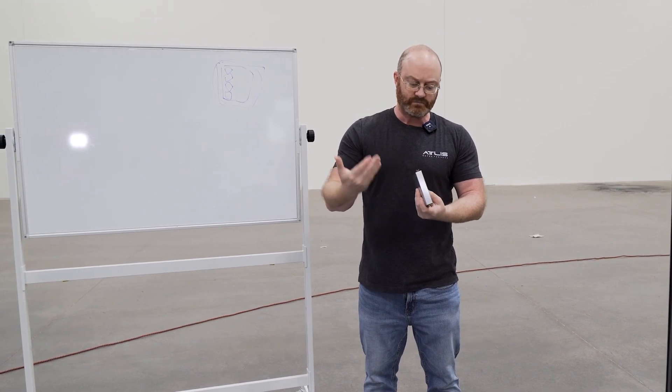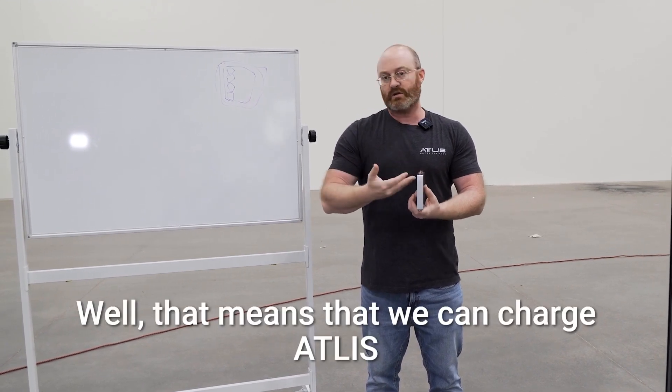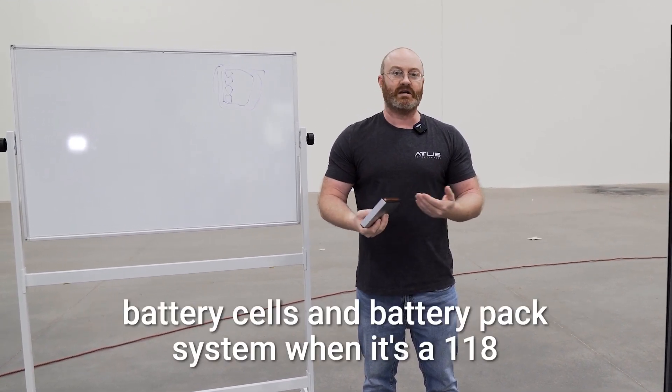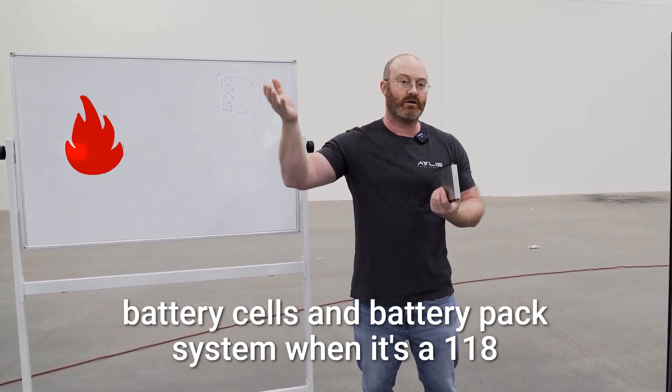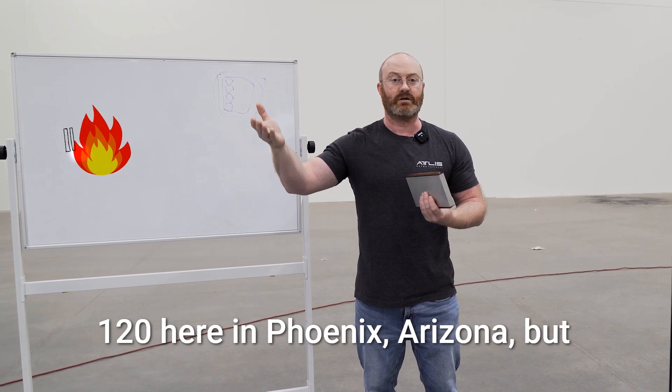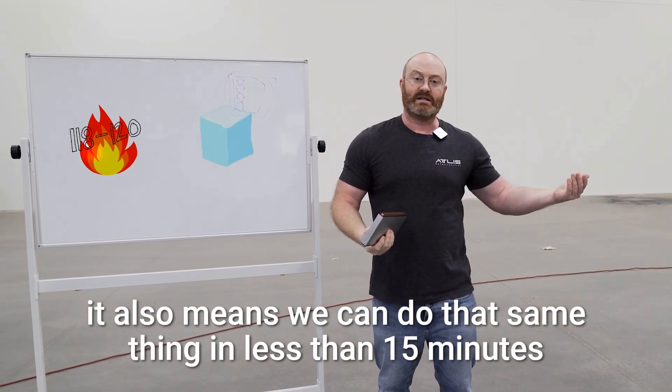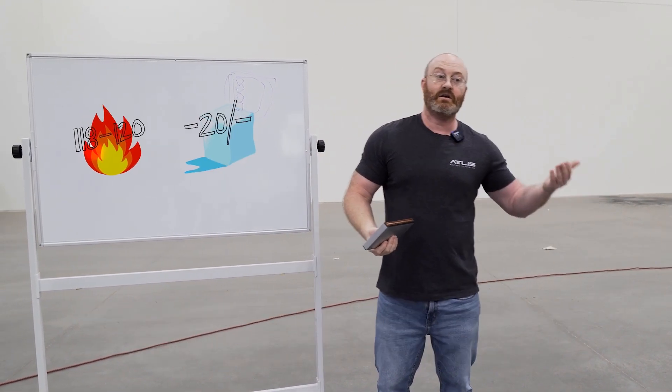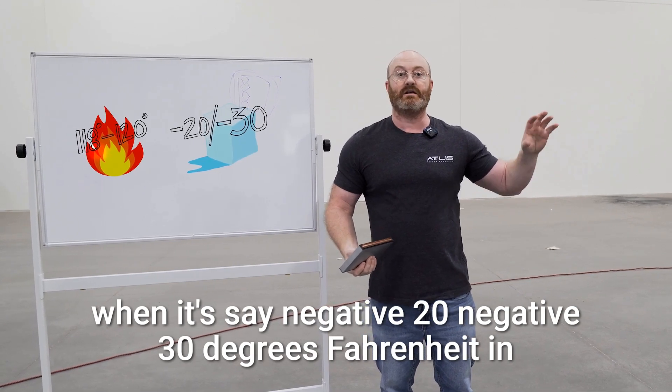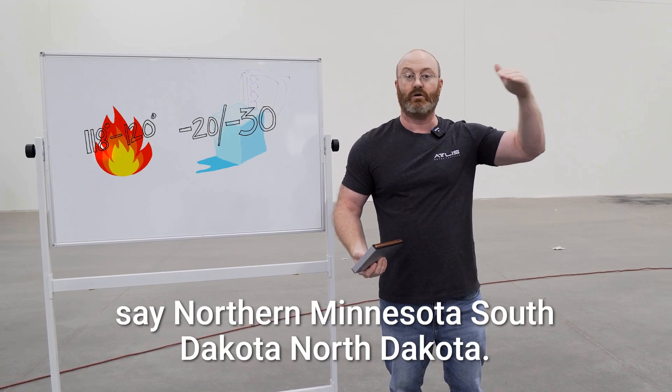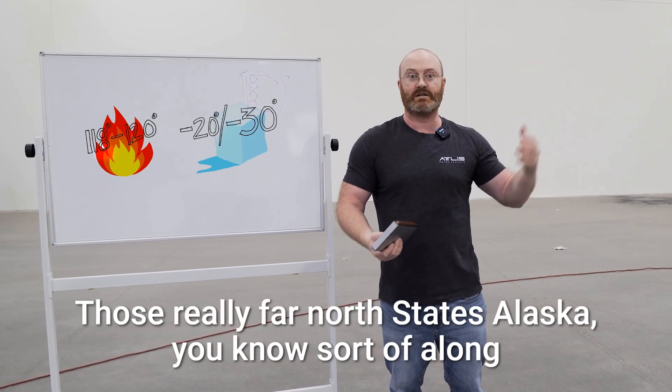Now what does that mean? Well that means that we can charge Atlas's battery cells and battery pack system when it's 118, 120 degrees here in Phoenix, Arizona. But it also means we can do that same thing in less than 15 minutes when it's say negative 20, negative 30 degrees Fahrenheit in say northern Minnesota, South Dakota, North Dakota, those really far north states, Alaska.